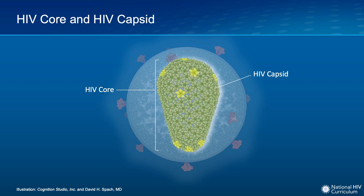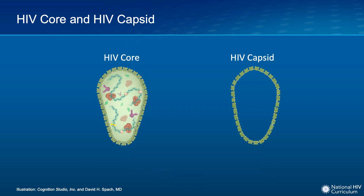The outer shell of the HIV core is referred to as the HIV capsid or capsid shell. Sometimes the terms HIV core and HIV capsid are used interchangeably, but it's preferable to distinguish these terms — with core describing the cone-shaped structure and all the contents inside it, as shown on the left, and capsid or capsid shell describing the outer lattice-like structure alone, as shown on the right.